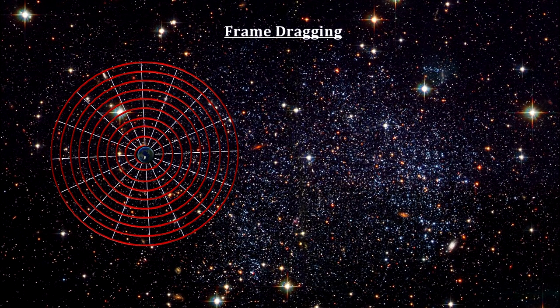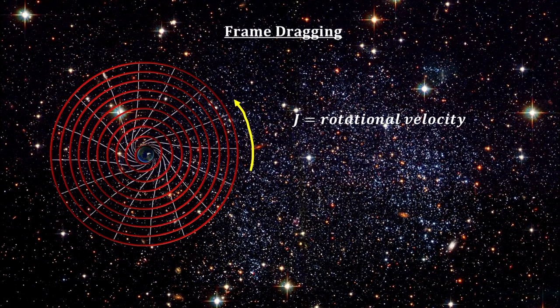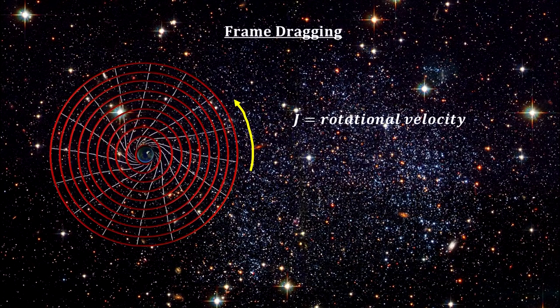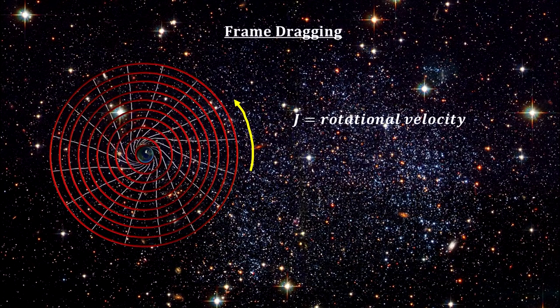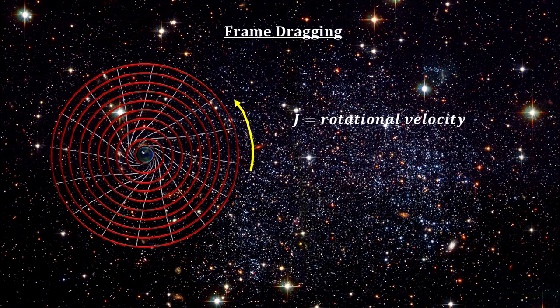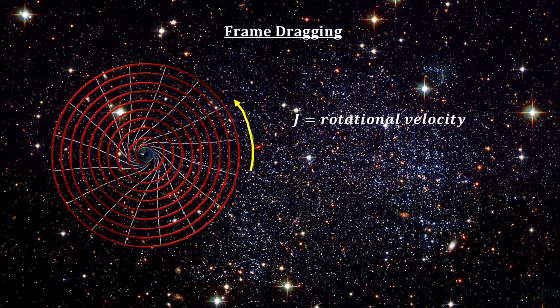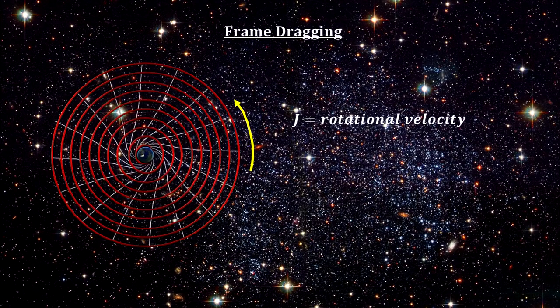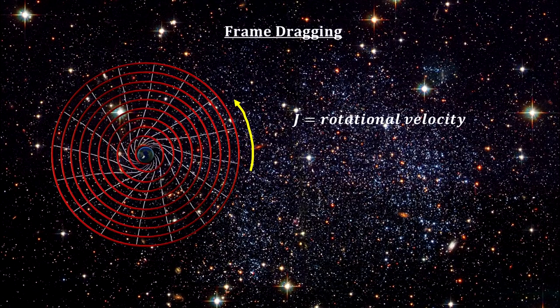The effect was derived in 1918 by physicists Joseph Lense and Hans Thirring. It is known as the Lense-Thirring effect. They predicted that the rotation of a massive object would distort the space-time metric, making the orbit of a nearby test particle precess like a gyroscope.